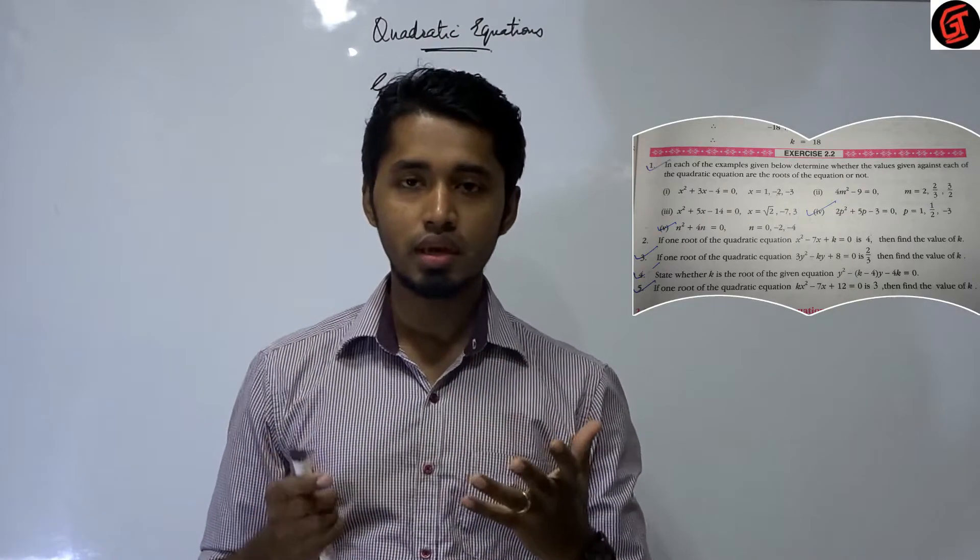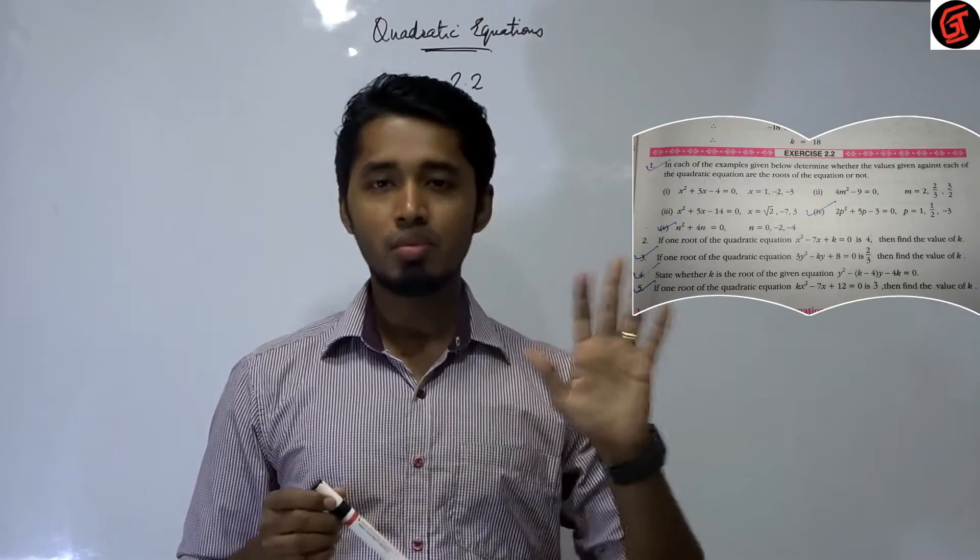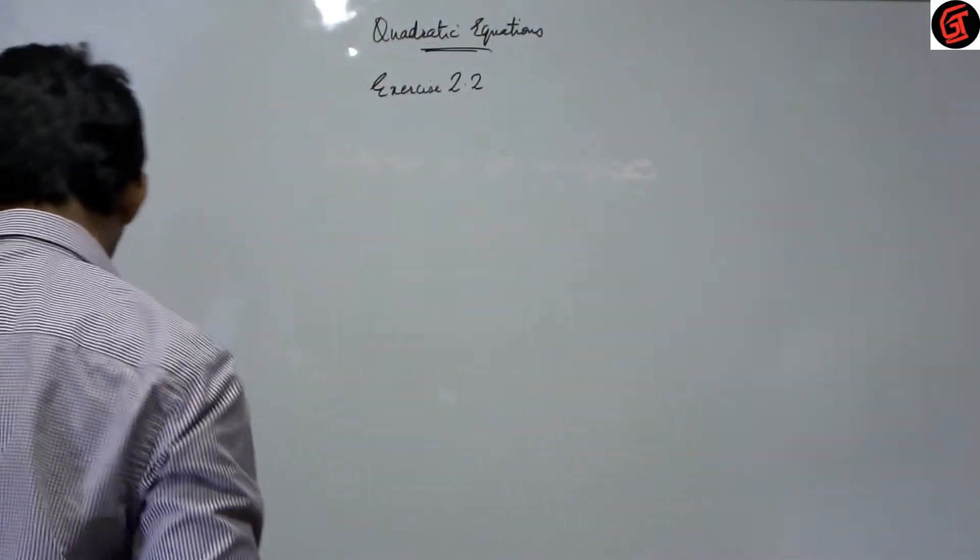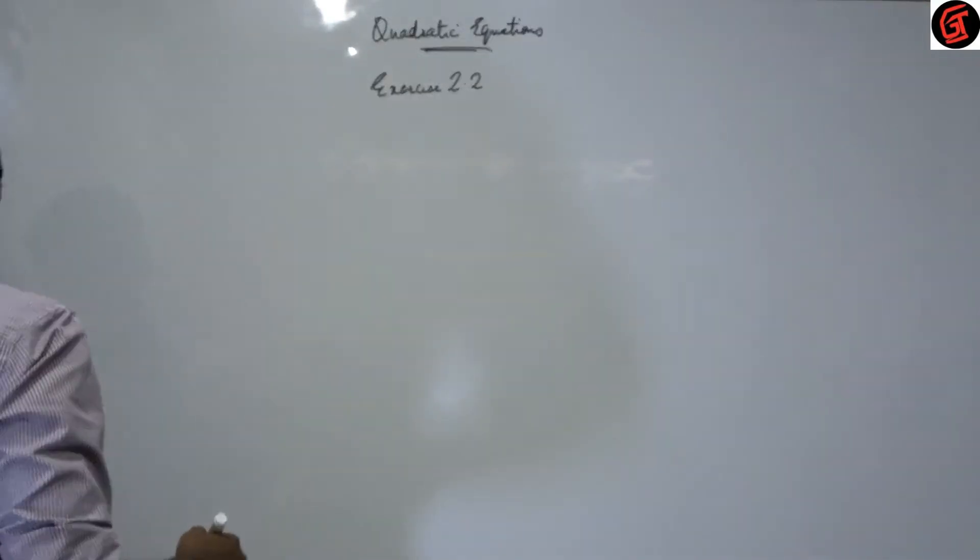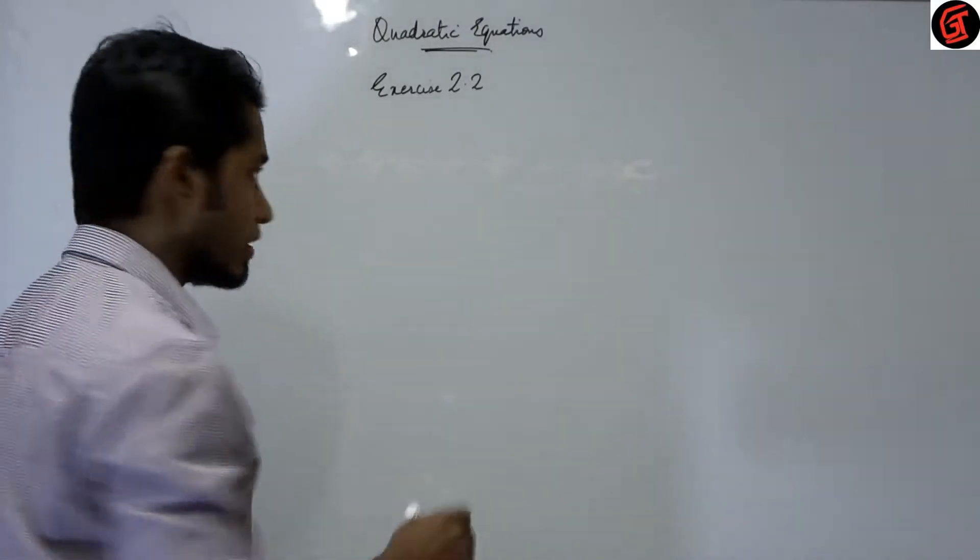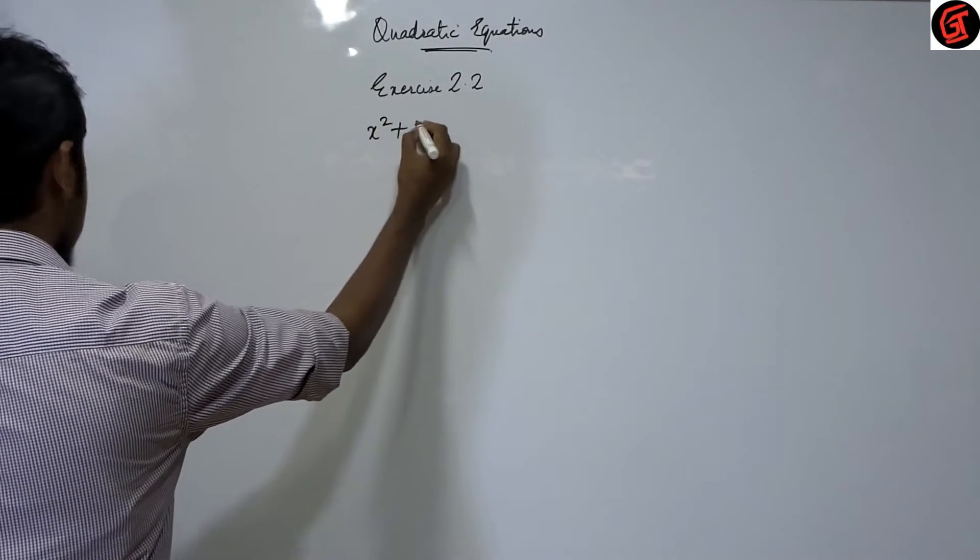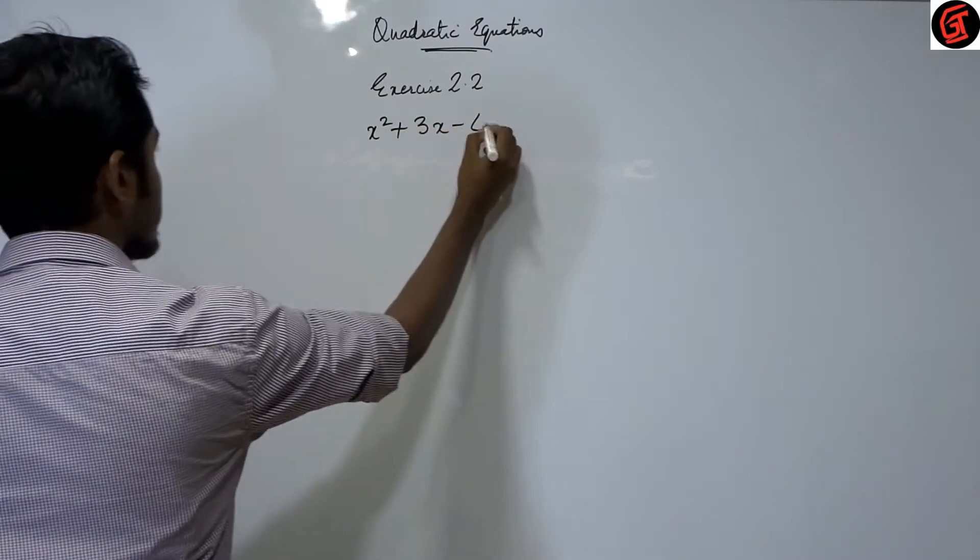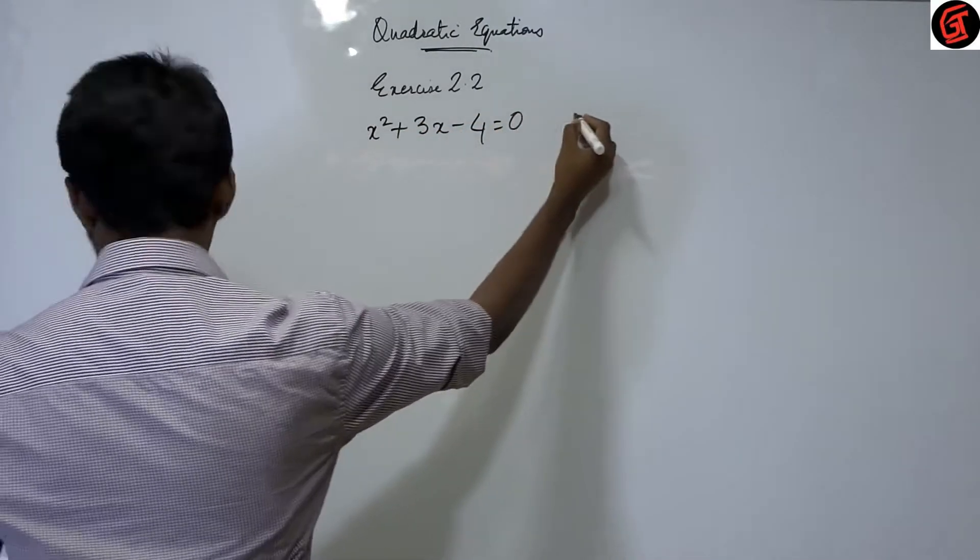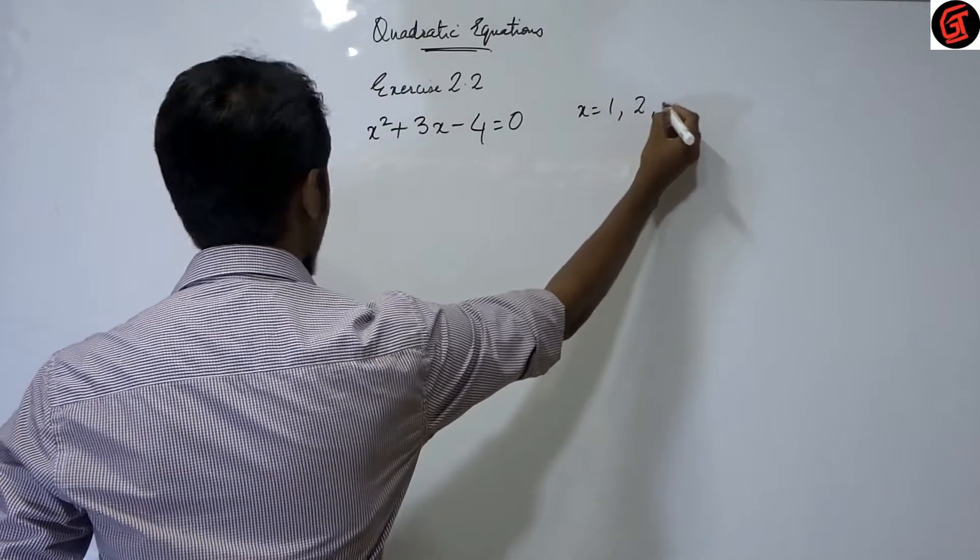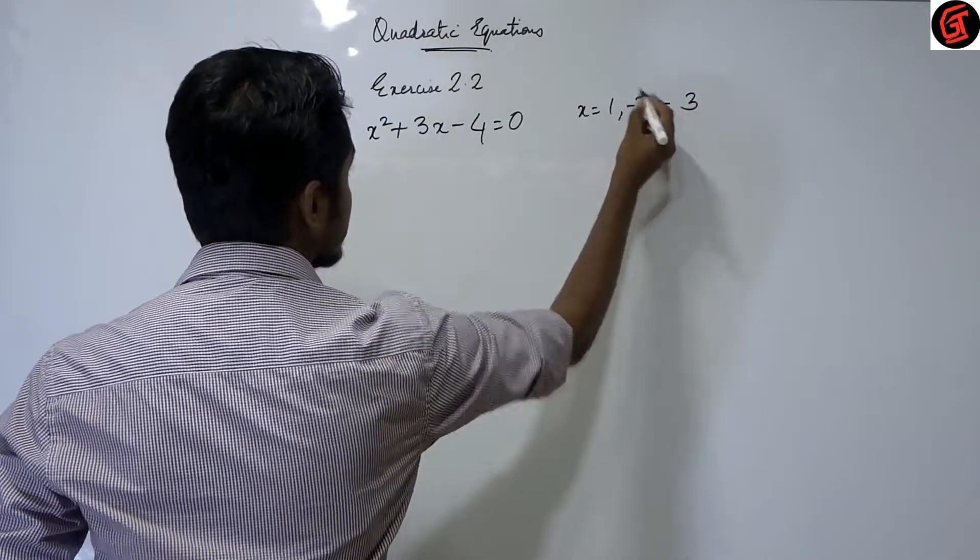Now that you have seen the question, you don't need to see it again. I will write it on another board. Let's do the first one. The question is x square plus 3x minus 4 is equal to 0. And there are 3 values given to us: x is equal to 1, 2, and minus 3, minus 2.